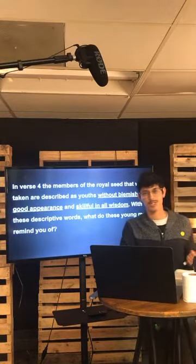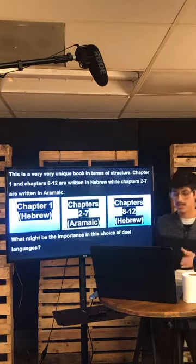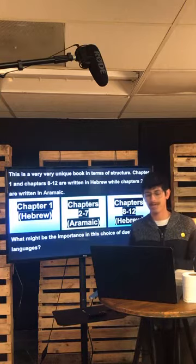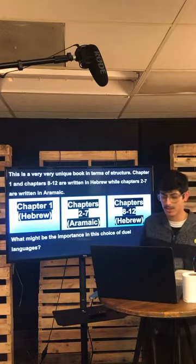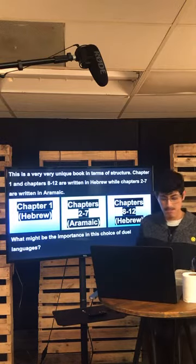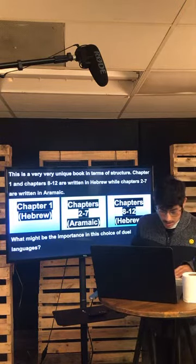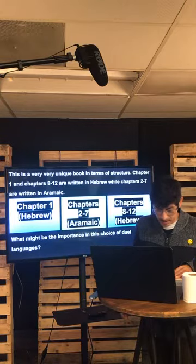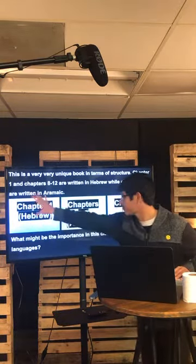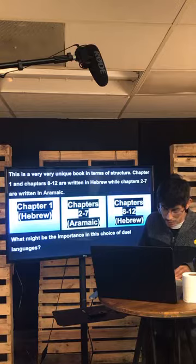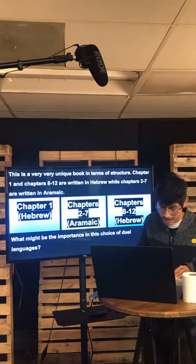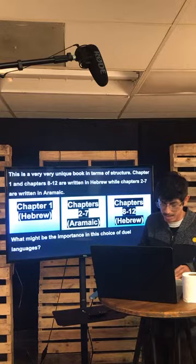Natasha, I gave you a point because you were right on the money with that. So I hope you have your Bibles open to Daniel chapter one. We're going to be reading that first chapter. It says: 'In the third year of the reign of Jehoiakim king of Judah, Nebuchadnezzar king of Babylon came to Jerusalem and besieged it. And the Lord delivered Jehoiakim king of Judah into his hands, along with some of the articles from the temple of God. These he carried off to the temple of his god in Babylonia and put them in the treasure house of his god.'